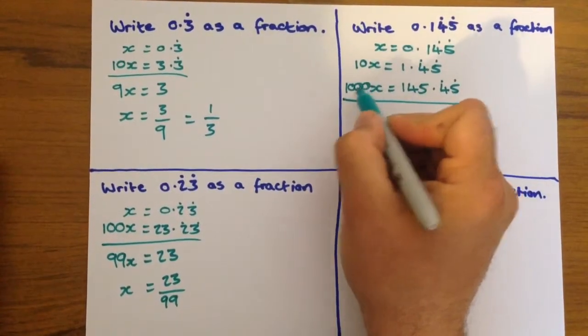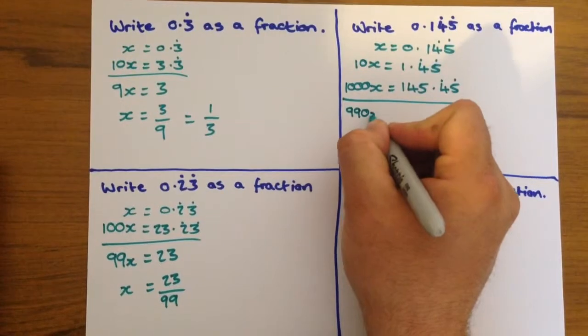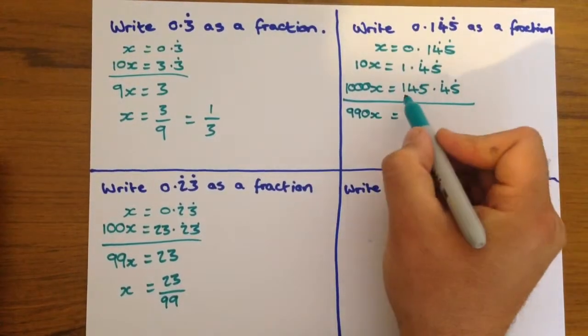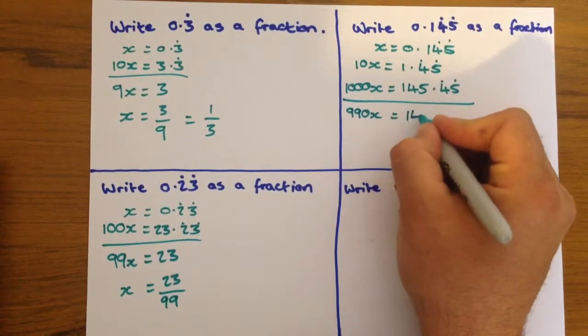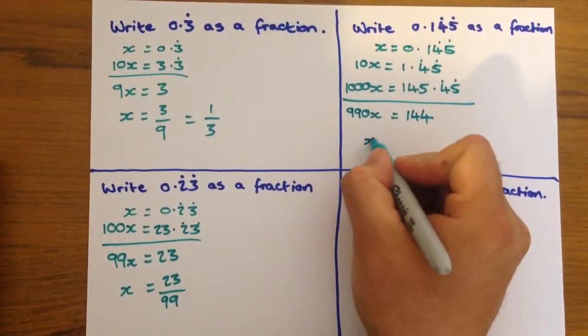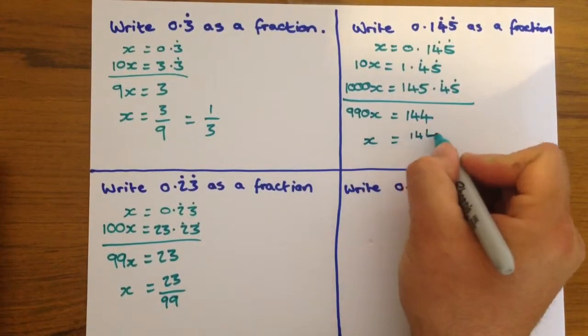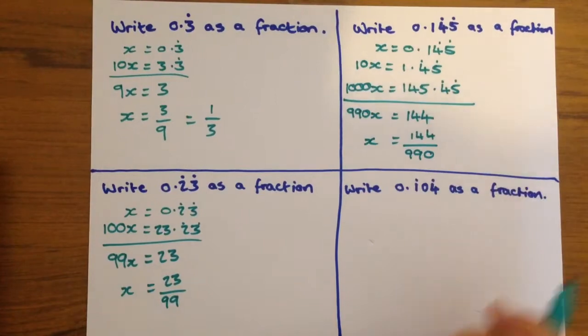Now, we're going to subtract these two values, so 1000x take away 10x is 990x, and 145.45 take away 1.45 leaves you with 144. Divide through by 990, x equals 144 over 990, and then you can cancel that down.